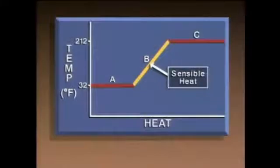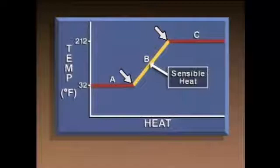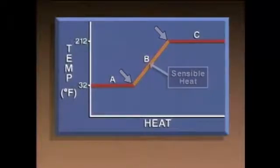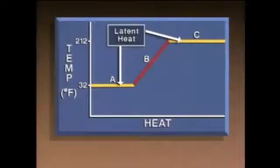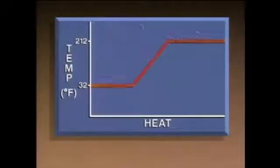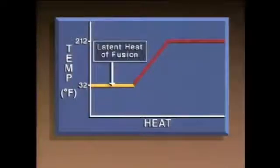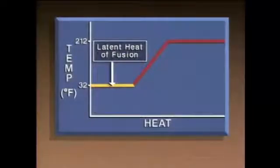Section B on the graph represents sensible heat, because from this point to this point the temperature of the water changes as a result of heat transfer. Sections A and C represent latent heat transfer because there are no temperature changes in these sections — only phase changes. The horizontal line at 32 degrees represents the latent heat of fusion, or melting.